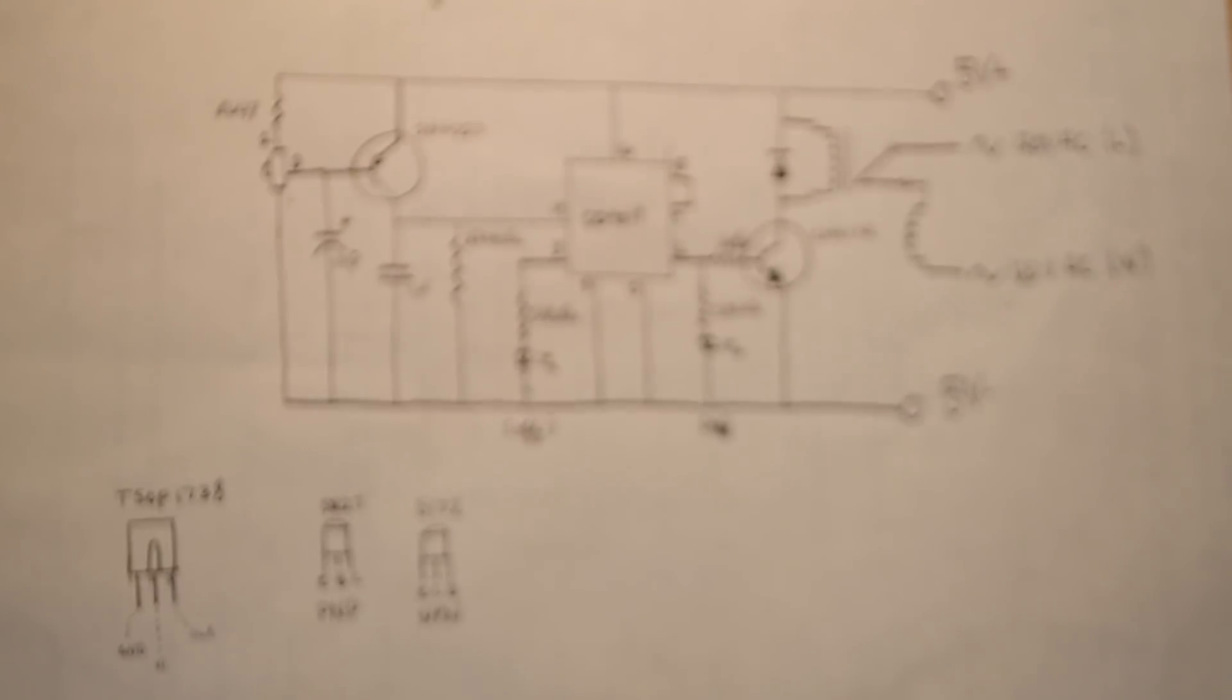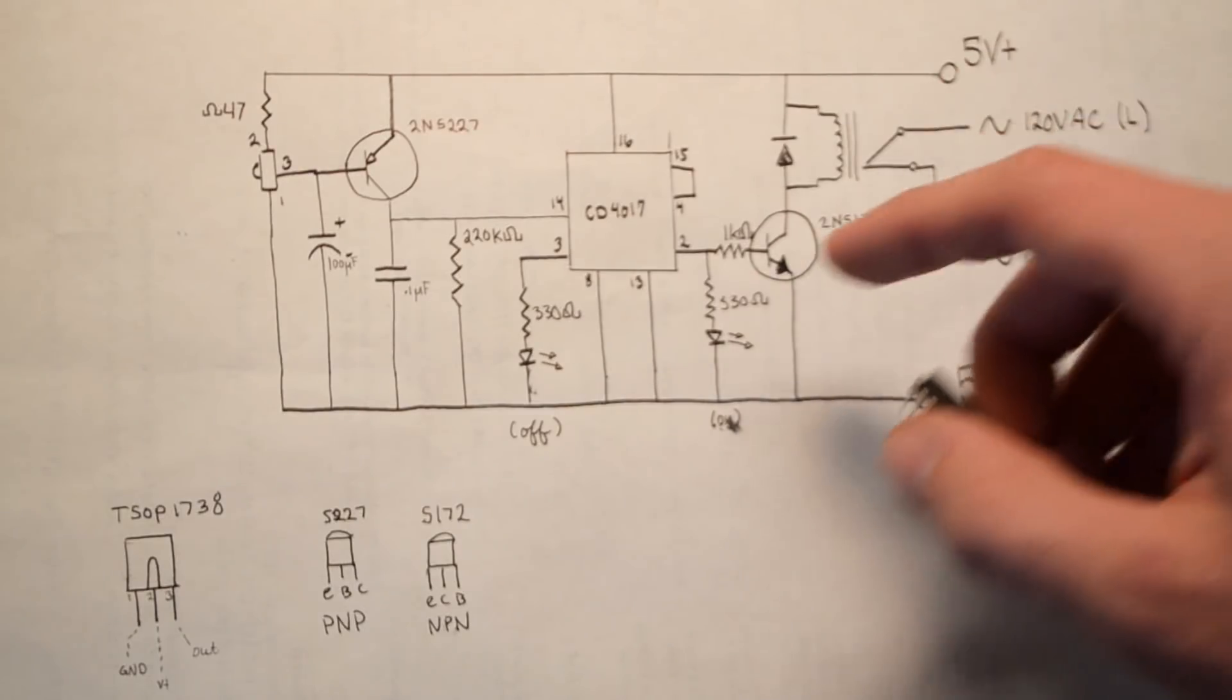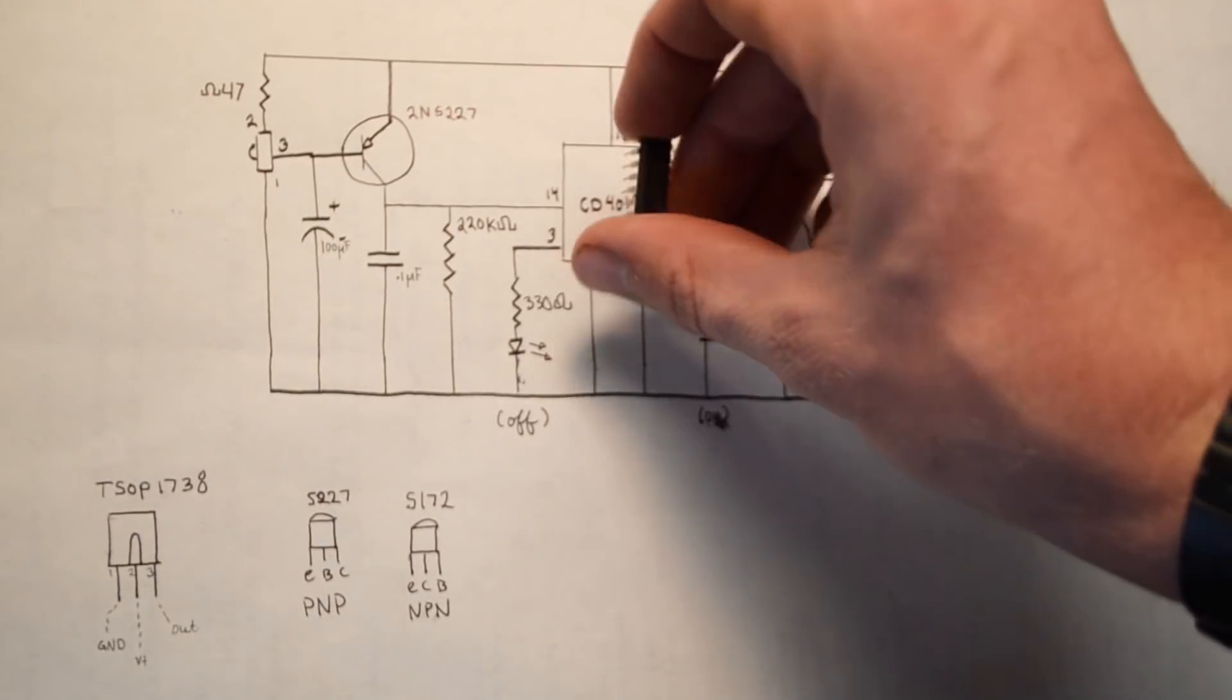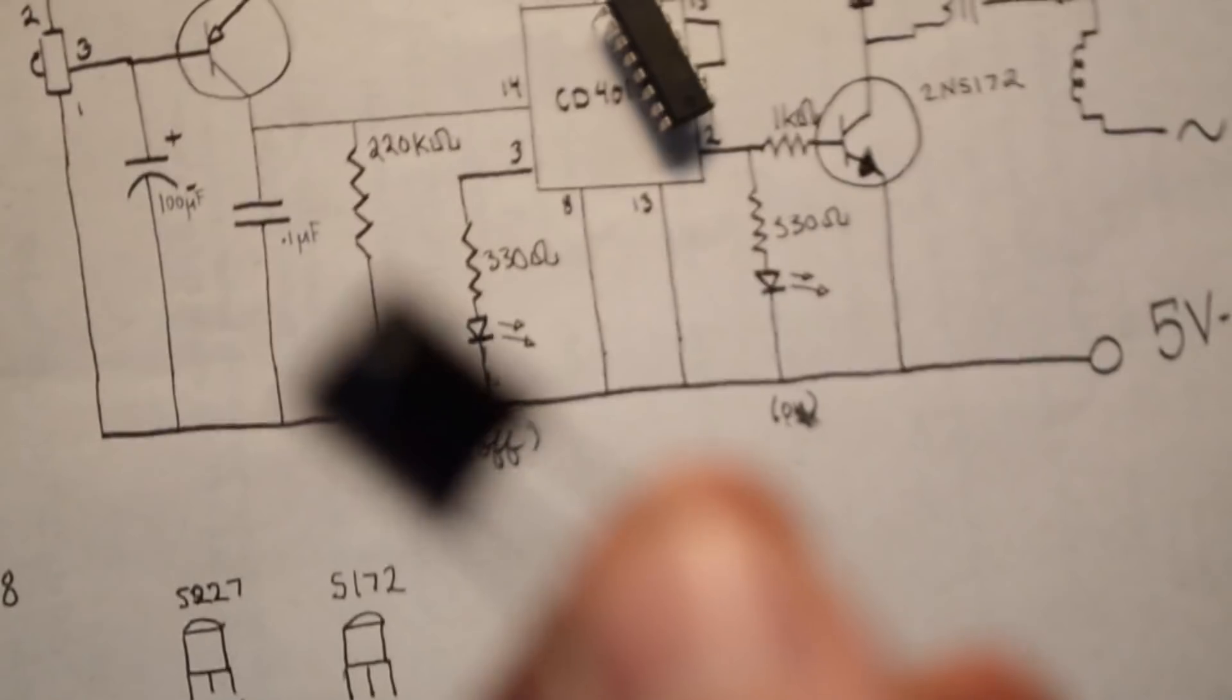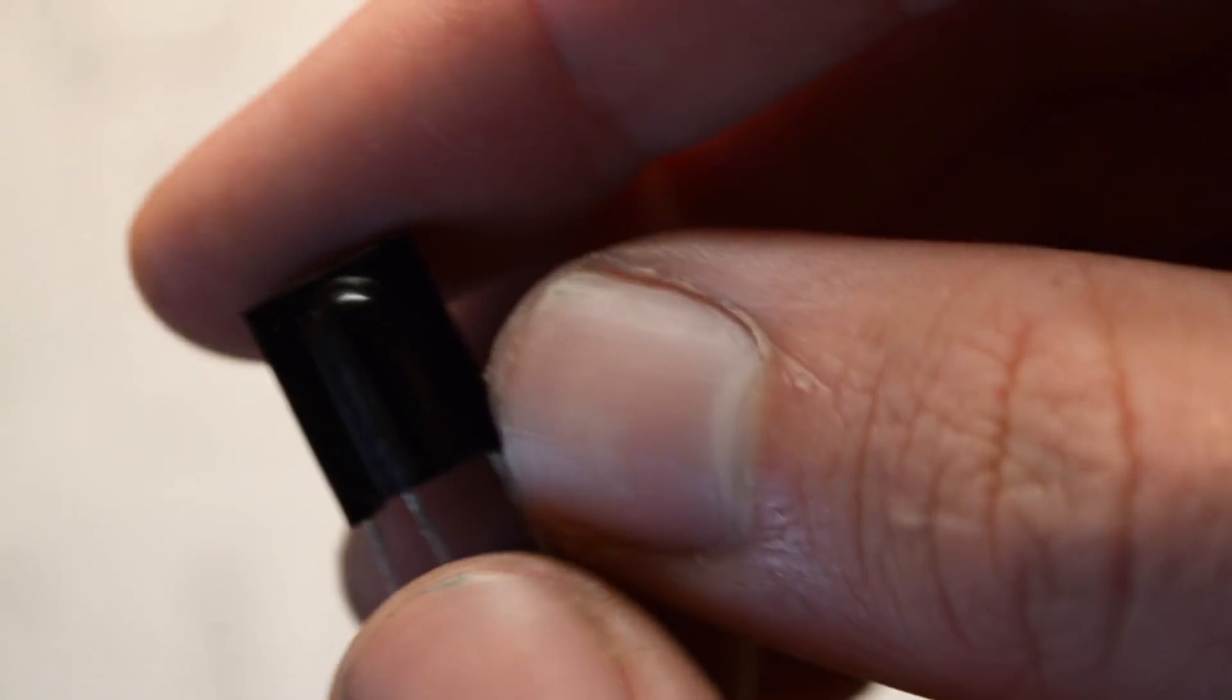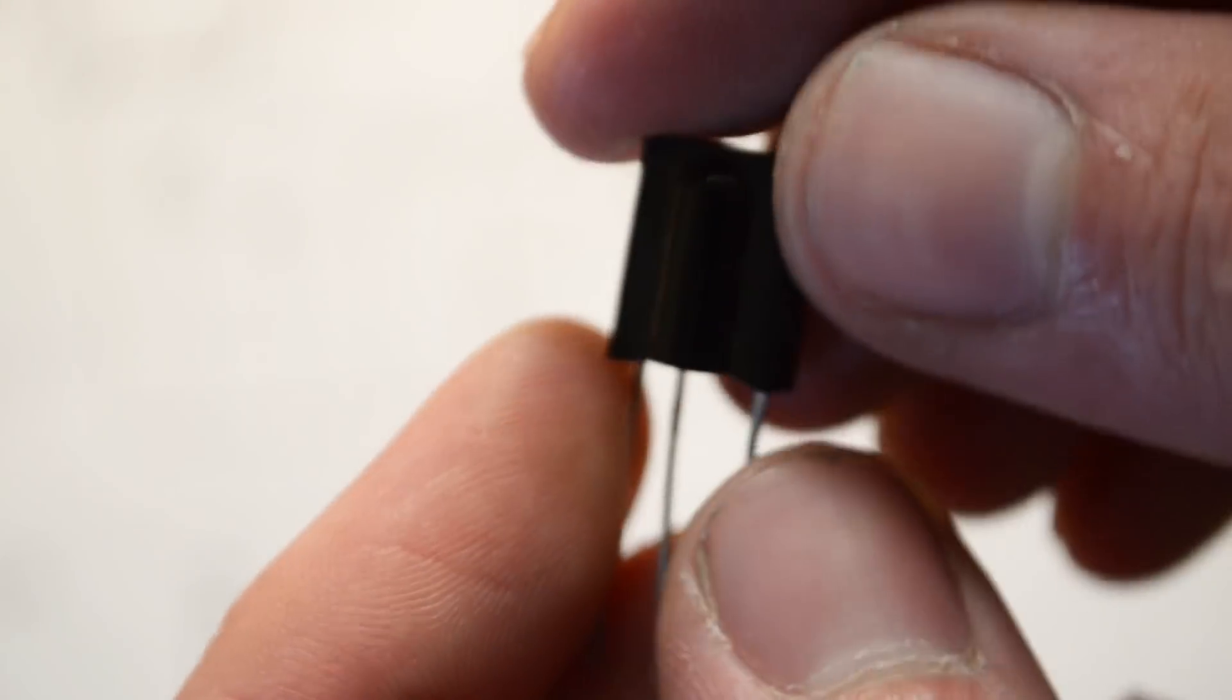Here's the circuit that we're going to be using. The circuit doesn't require that many components. The main brain of it is centered around this CD4017 which is a small 16-pin chip. You can find it on the internet for fairly cheap. The next most obscure thing is this TSOP1738 photodiode.